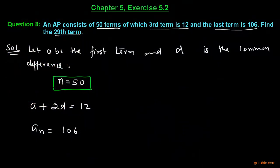Here is the 8th question of exercise 5.2 of Chapter 5. This question says an AP consists of 50 terms of which the third term is 12 and the last term is 106, and we have to find the 29th term.